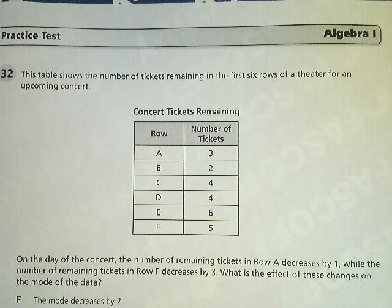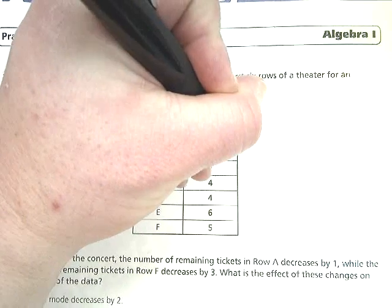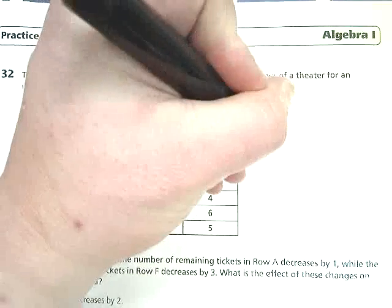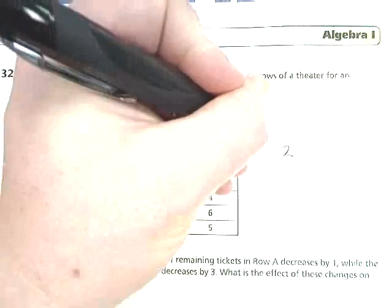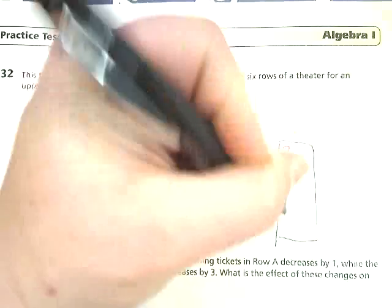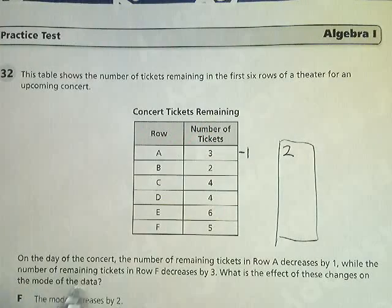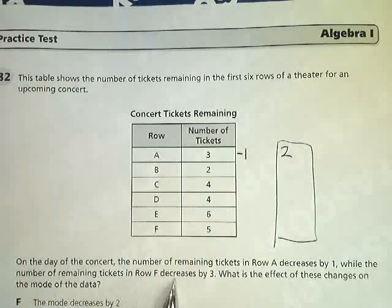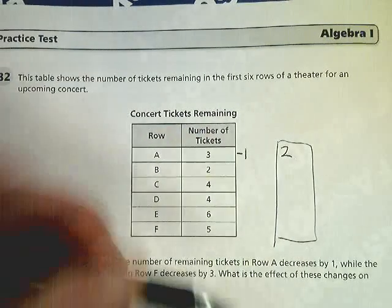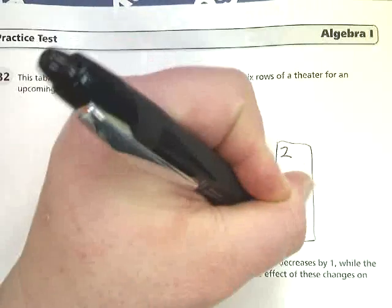On the day of the concert, the number of remaining tickets in row A decreases by 1, so it goes down to make a new 2. I'm going to write this set over here. While the number of remaining tickets in row F decreases by 3, so 5 minus 3 also gives you 2.